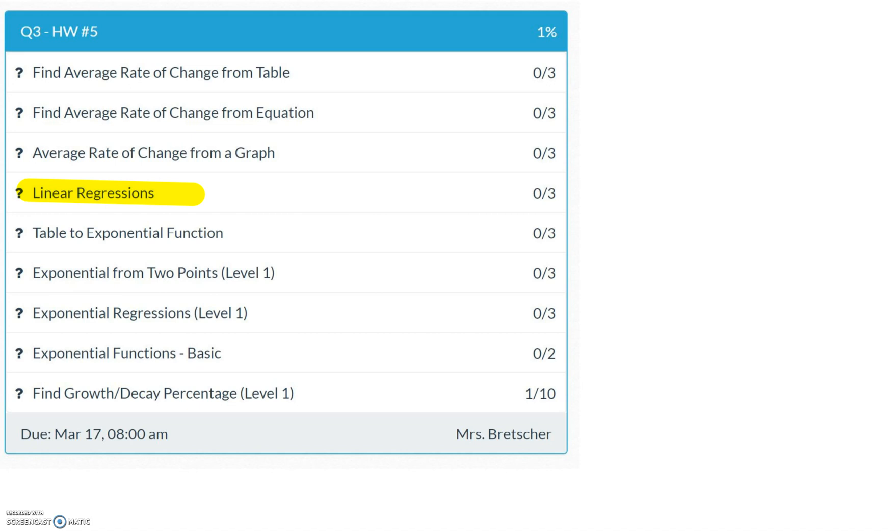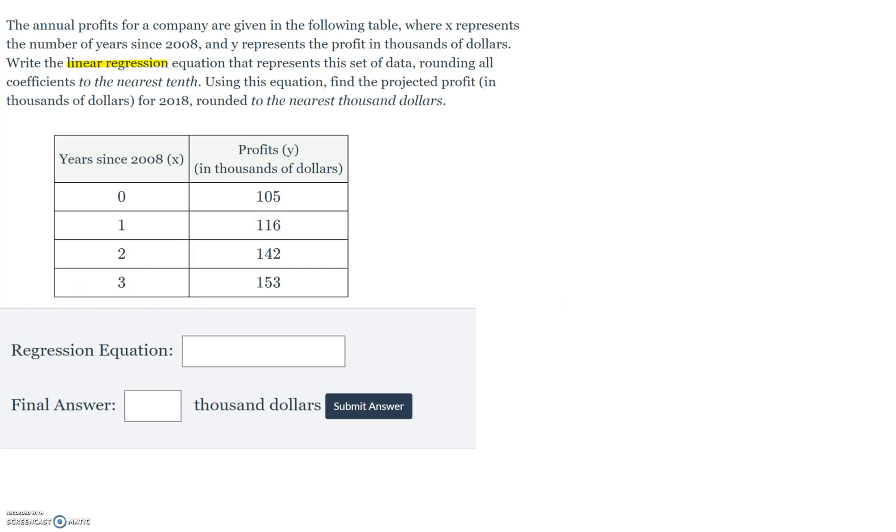Hey guys, so I'm just going to do a quick video on three of the topics on your delta map that I feel like are the most troublesome. The first one is going to be under linear regressions, and based off this example, it says that they want you to write a linear regression, and when you see linear regression, you should be thinking stat calc 4.